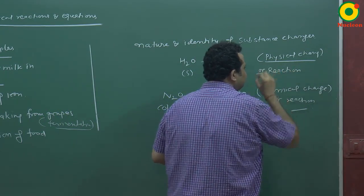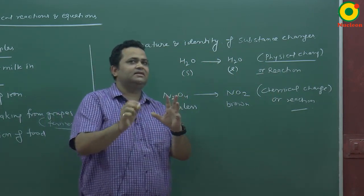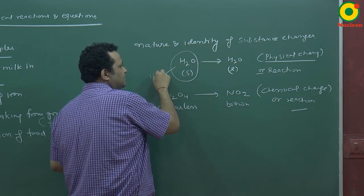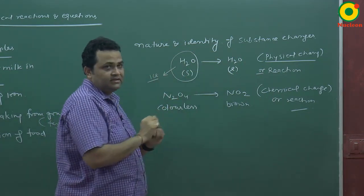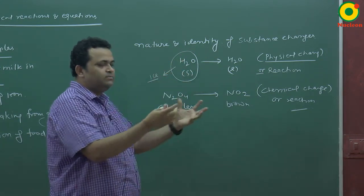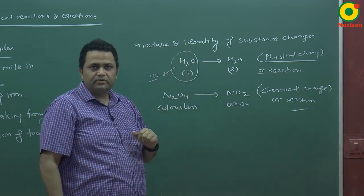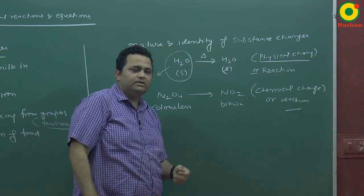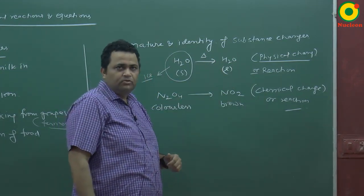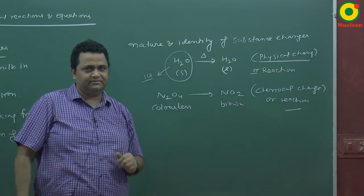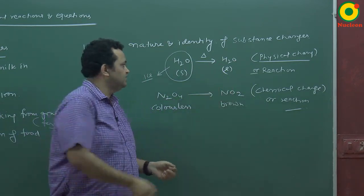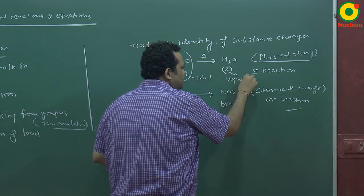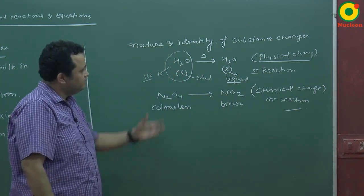A physical change or physical reaction means that only the physical state is changed. For example, H2O solid — we call it ice. If we start to warm the ice, heat is applied and H2O liquid is obtained. The water molecule remains the same, but the physical state is changed — it was solid and it converts into liquid. So this is a physical reaction.